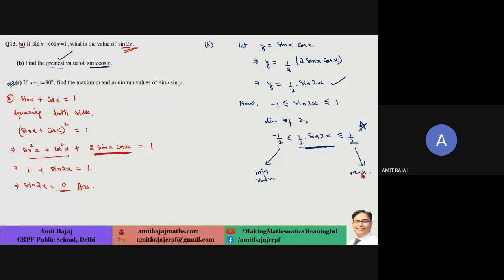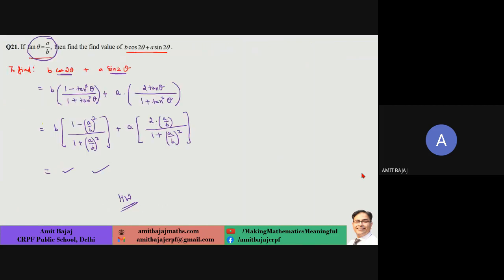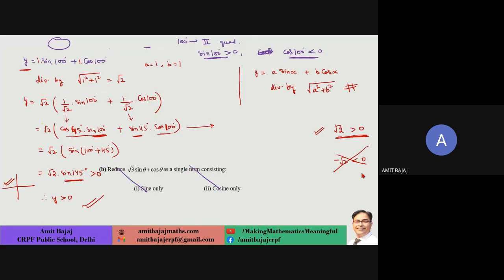Ten questions from the assignment. Standard and simple questions — check these out. Whenever an expression of the form a sin x + b cos x appears, prefer dividing by √(a² + b²). Even if you're not just finding maximum and minimum, there's a reason for it — it converts into a single trig function either in terms of sin or cos.